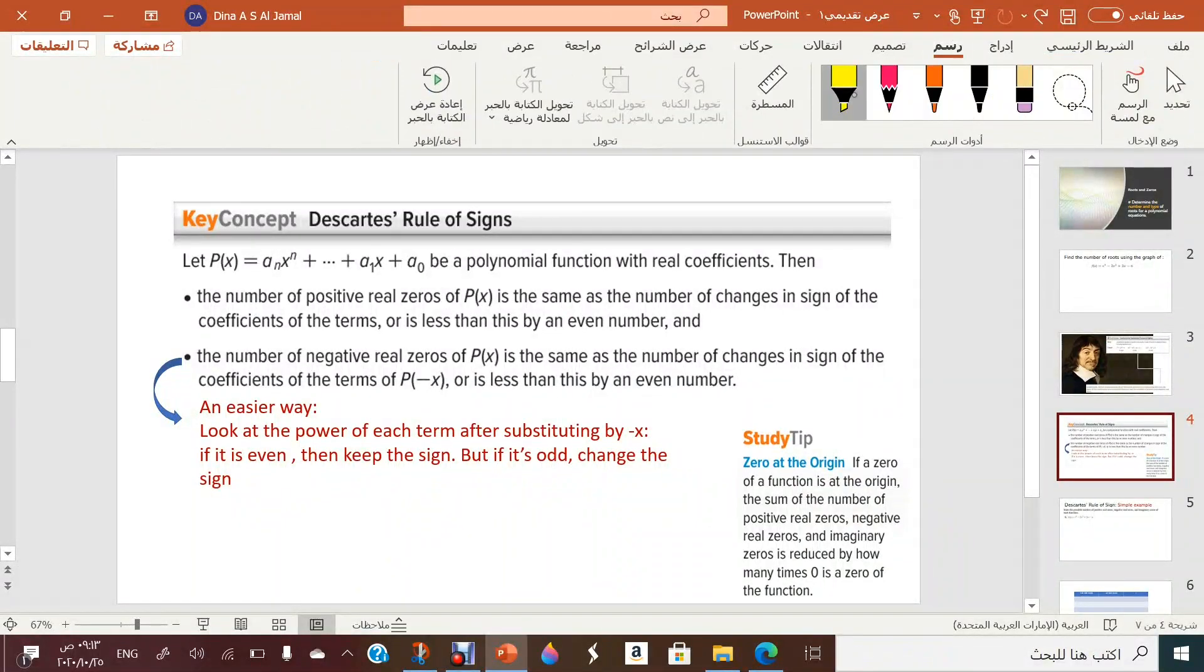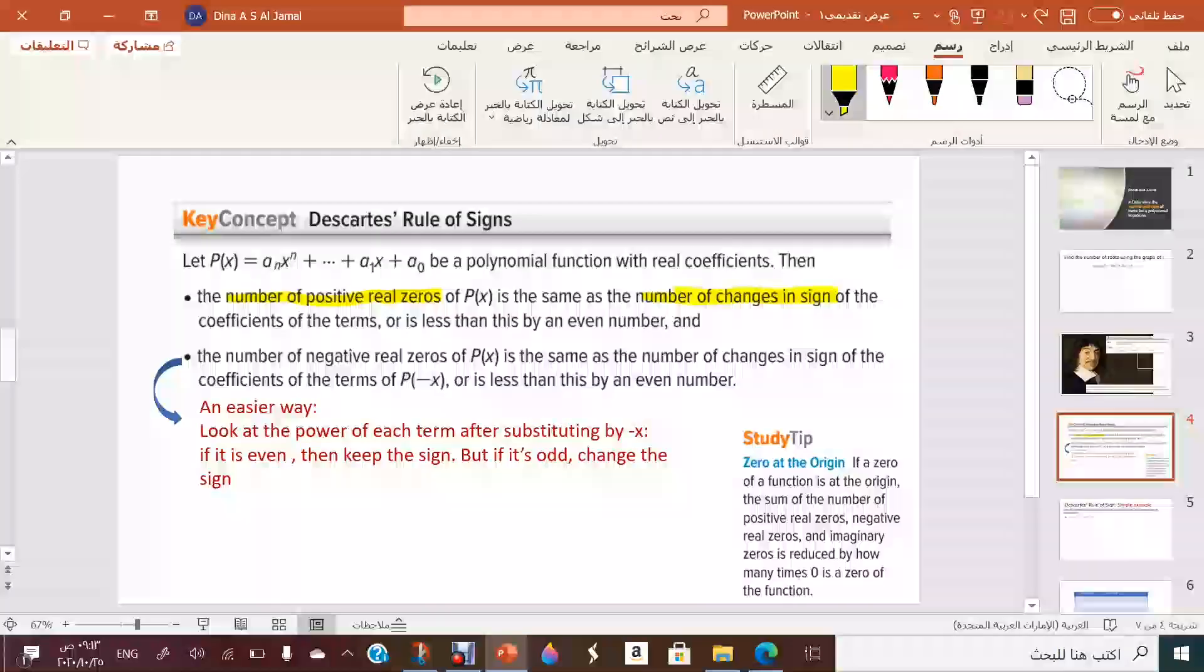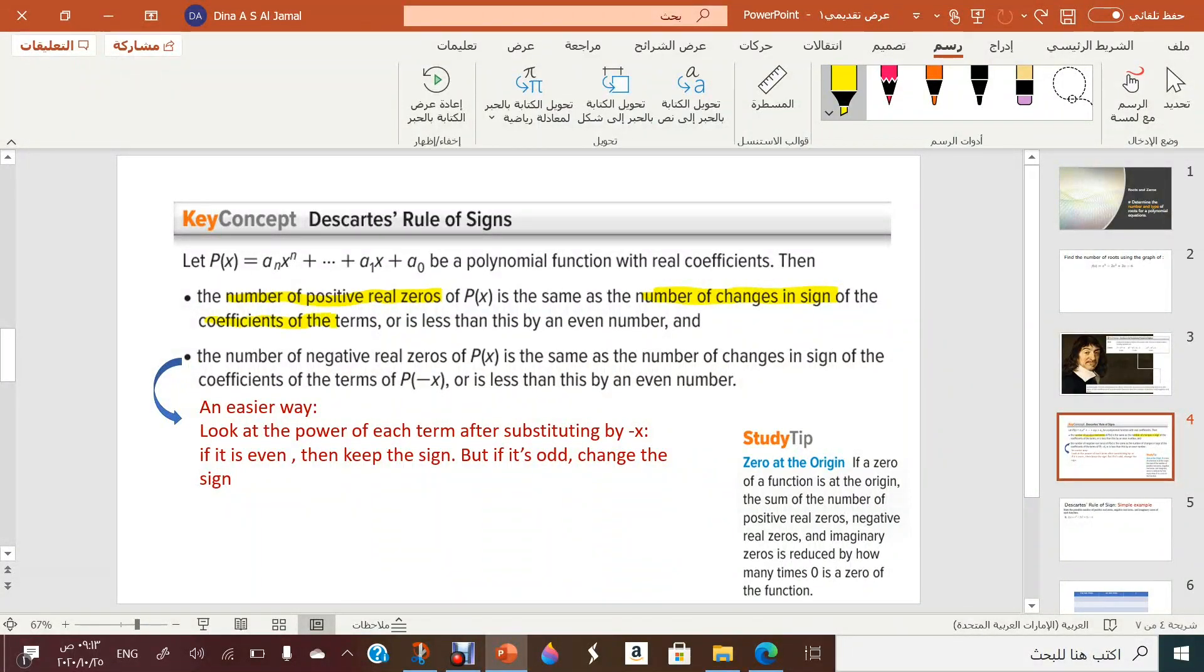So after reading it, you will be knowing that the number of positive real zeros after taking the sign change is as the number of the sign change when you have looked at the coefficients, or you can take less than this by an even number. And pay attention to this. And the number of negative real zeros will be the same as the number of sign change or less than it by an even number. But what is the difference? The first one it was the sign change for p of x, but the second one it is the sign change for p of minus x.